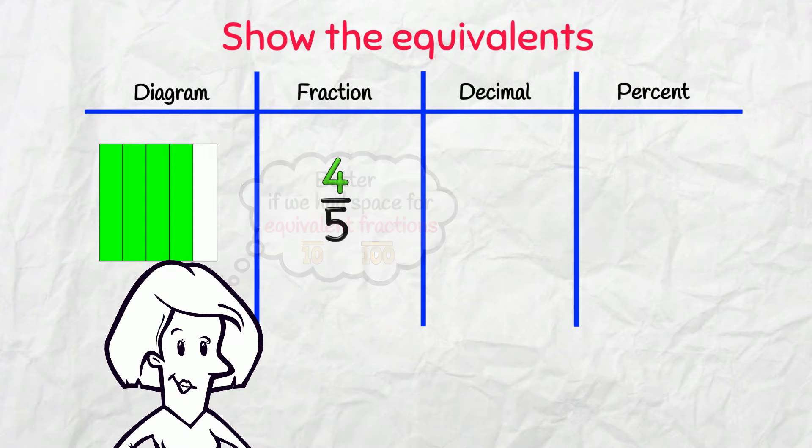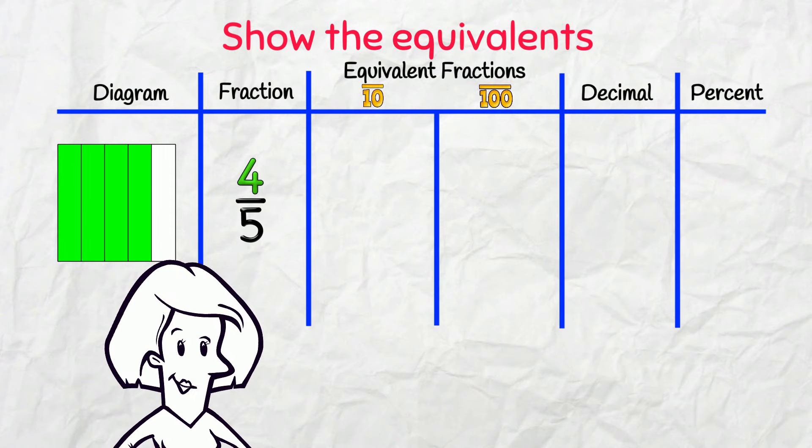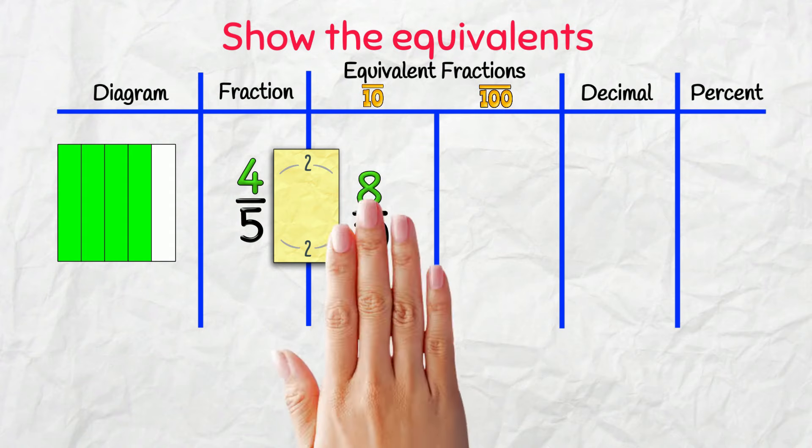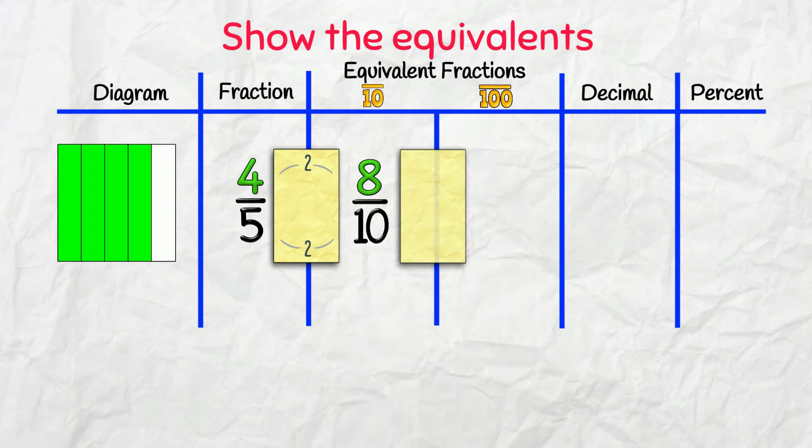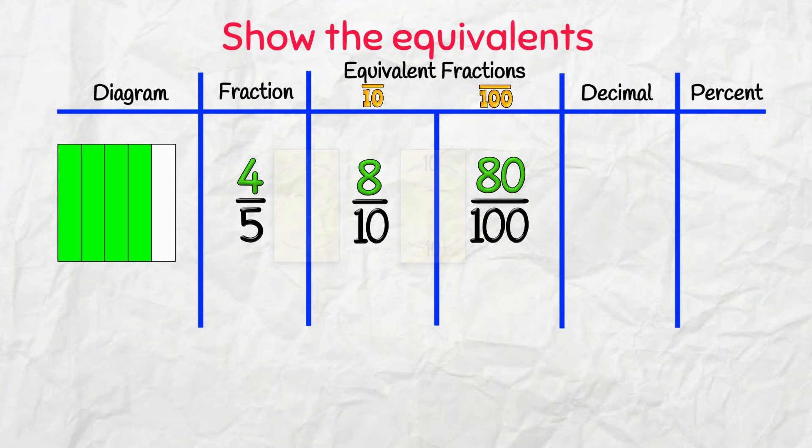Let's do that now! That's better! Now, let's make those equivalents! A factor of 2 gets me 8 tenths, and a factor of 10 gets me 80 over 100. For the decimal...